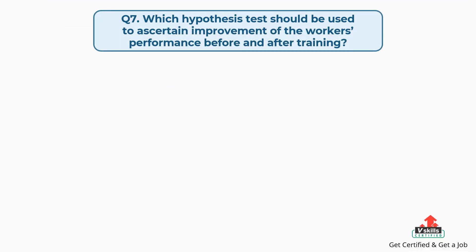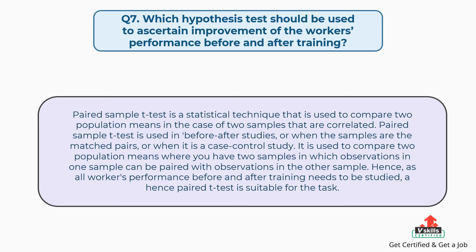Question number seven: Which hypothesis test should be used to ascertain improvement of the worker's performance before and after training? Paired sample t-test is a statistical technique used to compare two population means in the case of two samples that are correlated. It is used in before-after studies, or when the samples are matched pairs, or when it is a case control study. It is used to compare two population means where observations in one sample can be paired with observations in the other sample. Hence, as all workers' performance before and after training needs to be studied, a paired t-test is suitable for the task.